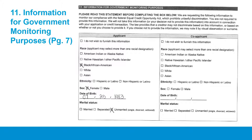Now please turn to page 7 in your application to Section 11, titled Information for Government Monitoring Purposes. This page is voluntary to complete. As a lender, Habitat Chicago must collect this information for statistical purposes for the federal government. The page is not stored with the application and no applicant names are attached to this data. The information collected does not have any bearing on the application process and is completely anonymous and confidential. Fill in only the applicant and co-applicant fields, and please do not fill in the section titled 'For Office Use Only.'